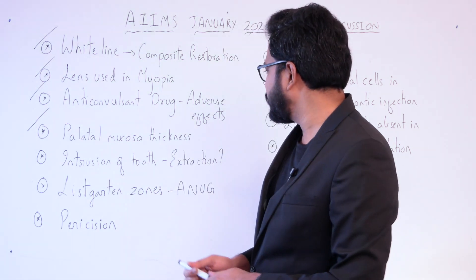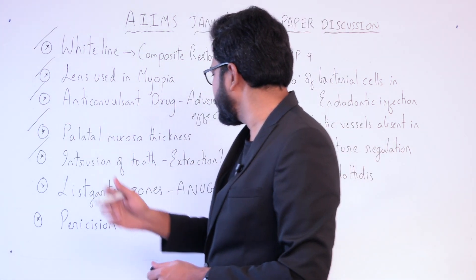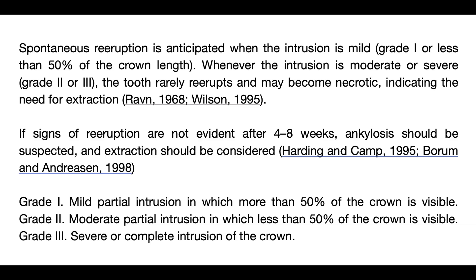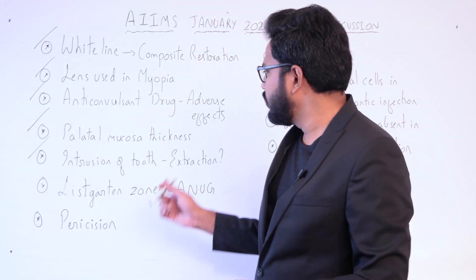For intrusion of a tooth and extraction criteria: intrusion is graded 1, 2, and 3. Grade 1 is mild partial intrusion with more than 50% of the crown visible. Grade 2 is moderate partial intrusion with less than 50% of the crown visible. Grade 3 is severe or complete intrusion. Extraction is indicated in Grade 2 and Grade 3 cases.